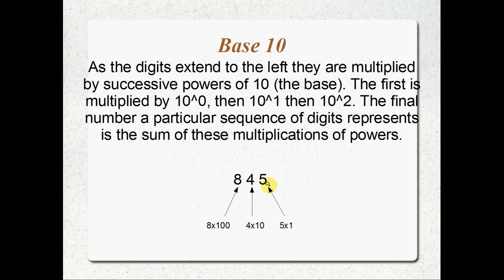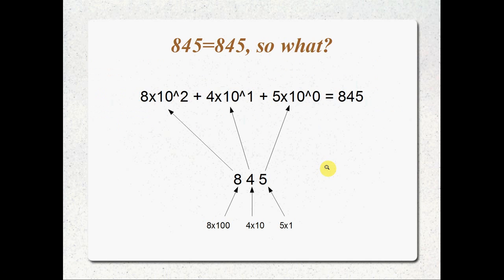What's actually happening is that each successive column to the left is being multiplied by a power of ten. The very first one is multiplied by ten to the power of zero, then ten to the power of one, then ten to the power of two — that's the eight just here. And of course we'd have ten to the power of three, four, five, et cetera. So we just keep multiplying by one, then ten, then a hundred, then a thousand, then ten thousand, a hundred thousand — you know how it works.